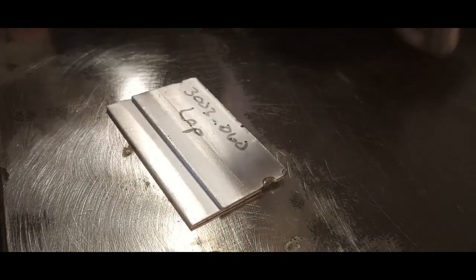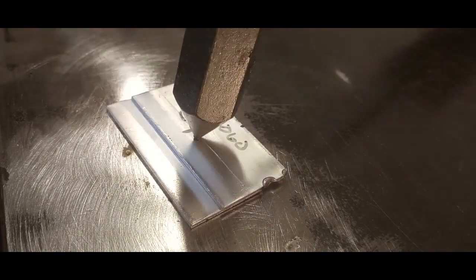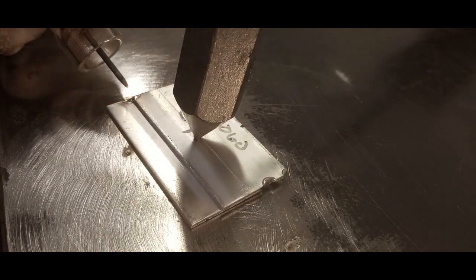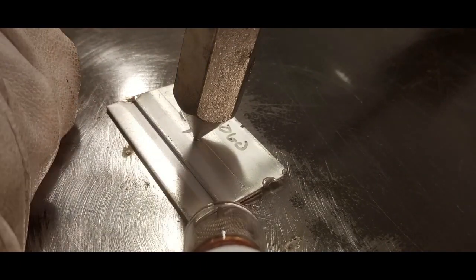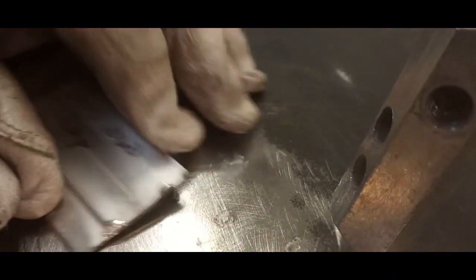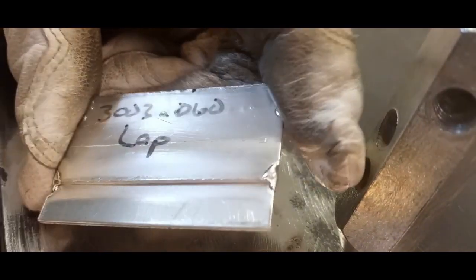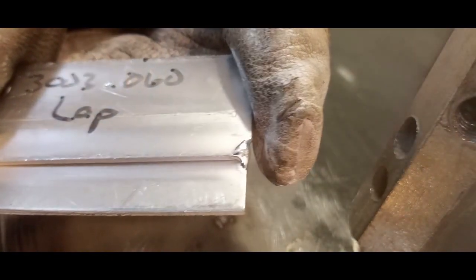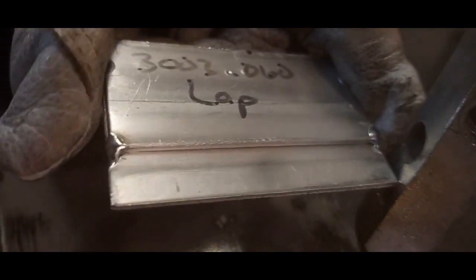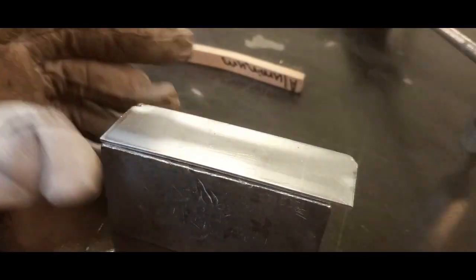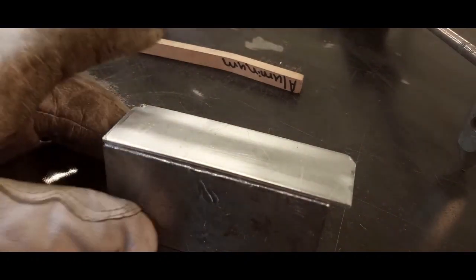So let's try the aluminum with a lap joint. And there you see, now you want to keep in mind these are just fusion welds, so they don't have any filler or anything like that, so you can't expect them to be super strong.